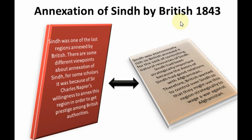The most important viewpoint is that the British authorities wanted to gain prestige, and that Sindh was strategically very important. The Amirs of Sindh had very good relations with Afghanistan. So because of this, the British wanted to control over Sindh — they wanted to use this region strategically to wage war against Afghanistan. That is why the British wanted to annex Sindh.